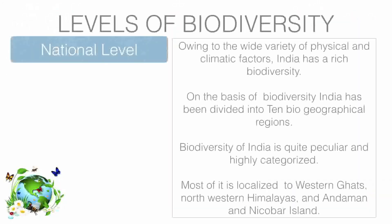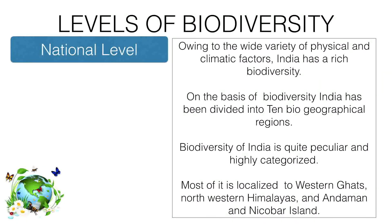At the national level, India is known as a mega-diversity nation due to its wide variety of physical and climatic factors. India has rich biodiversity and has been divided into 10 bio-geographical regions. Most of India's biodiversity is localized in the Western Ghats, north-western Himalayas, and the Andaman and Nicobar Islands.